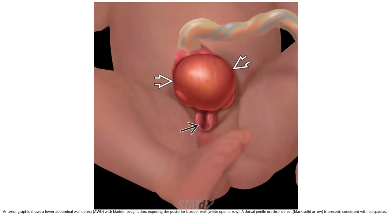Anterior graphics show lower abdominal wall defects with bladder evagination exposing the posterior bladder wall. Dorsal penile urethral defects are present, consistent with epispadias.